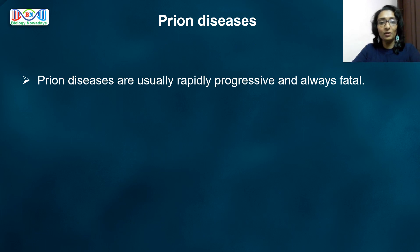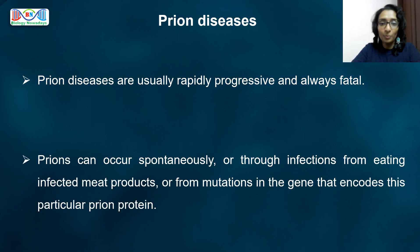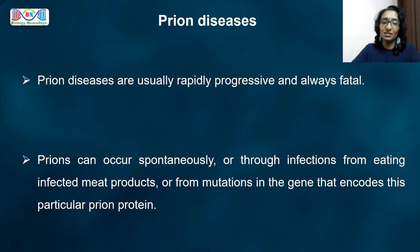All these prion diseases are usually rapidly progressive and always fatal — they eventually lead to death of the infected organism. Prions can occur spontaneously, or through infections from eating infected meat products, or through mutations in the gene that encodes this particular prion protein.